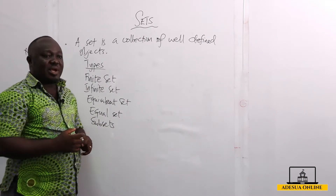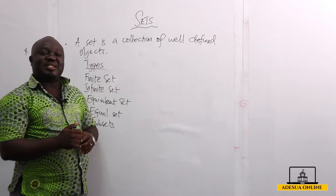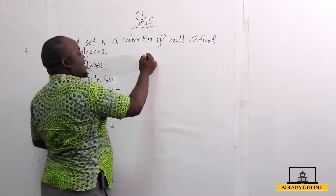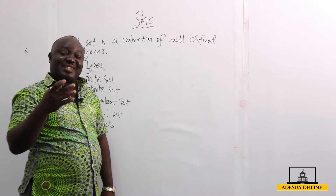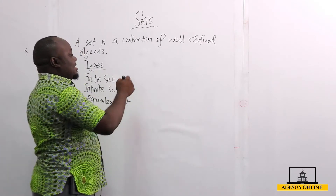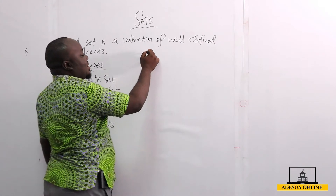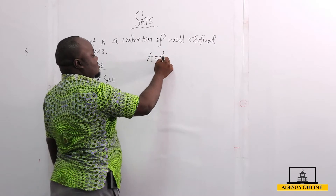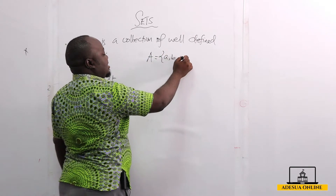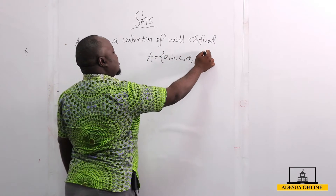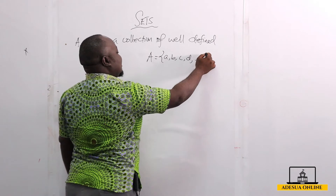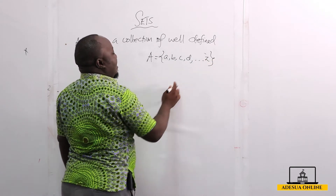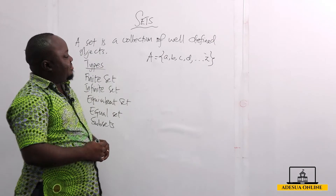Normally we represent sets using set-builder notation. So if I want to talk about the letters of the English alphabet, I can represent them by a capital letter A, which is equal to A, B, C, D, up to Z.